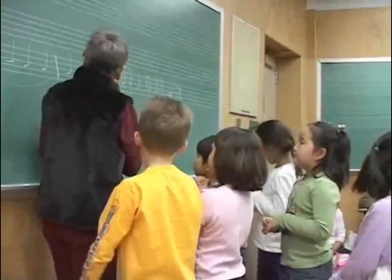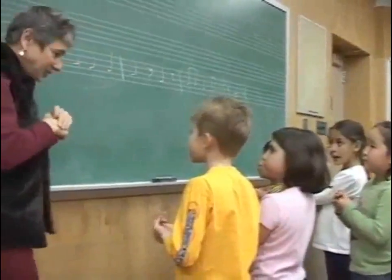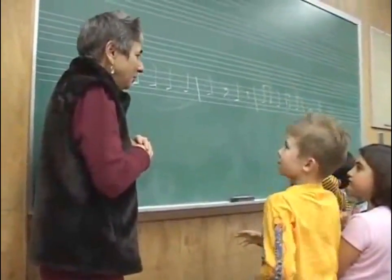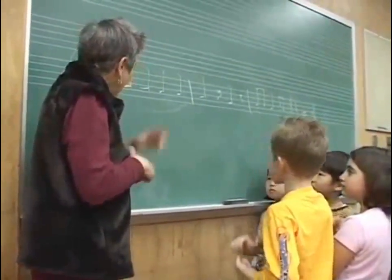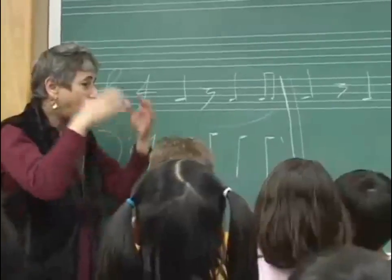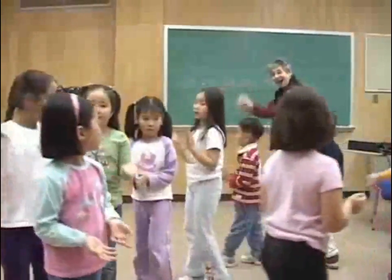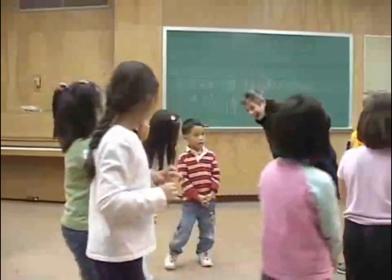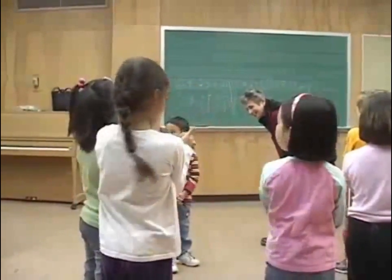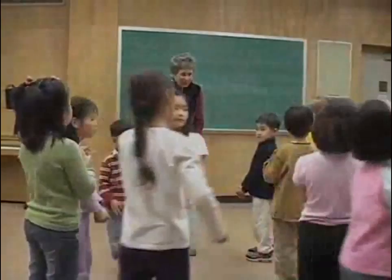Now, which measure should we take to do our feet and our hands together? We can choose any of these measures. Ta. You want to just do the ta's? Ta, rest. Ta-ti-ti-ta, rest. Ta-ti-ti-ta. Ah, ah, ah. And that's it. Thank you, everybody. We'll see you next week. Thank you, everyone.